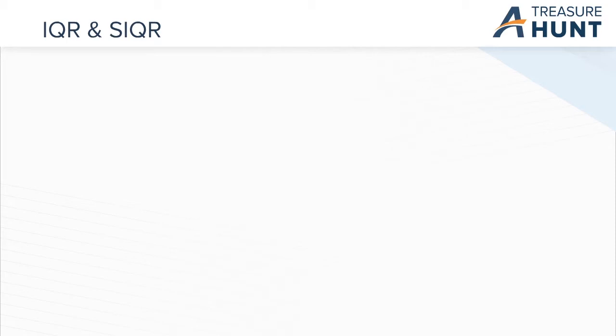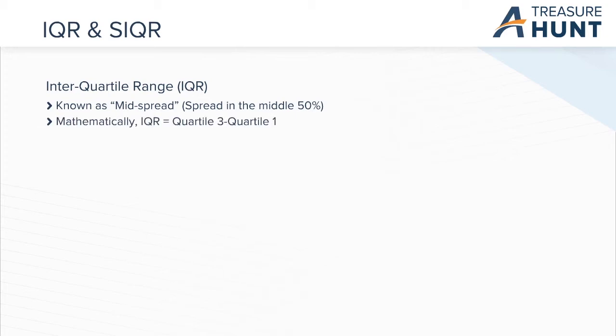We will now talk about the concepts of IQR and SIQR. IQR stands for interquartile range. It is also known as mid-spread, that is, spread in the middle 50%, the difference between the first and third quartile. SIQR stands for semi-interquartile range, which is half of IQR.